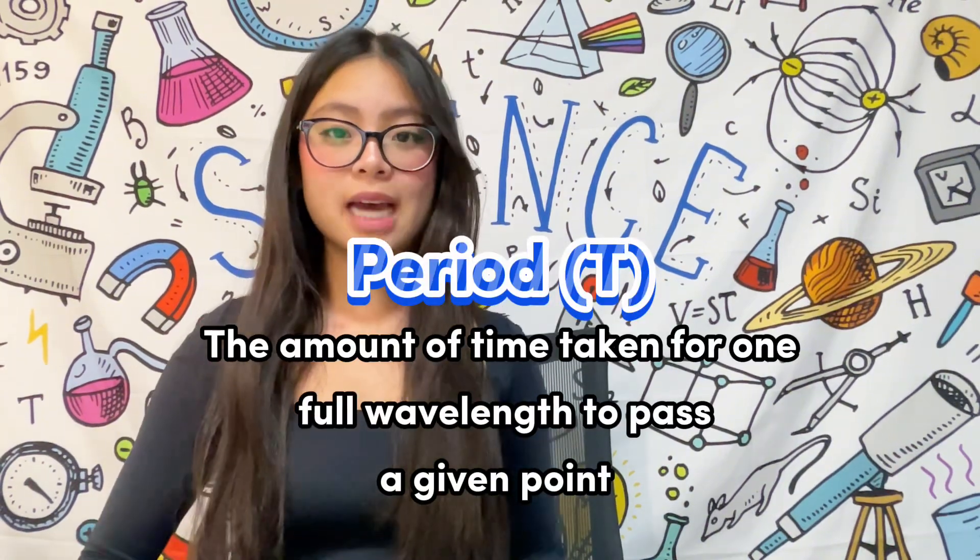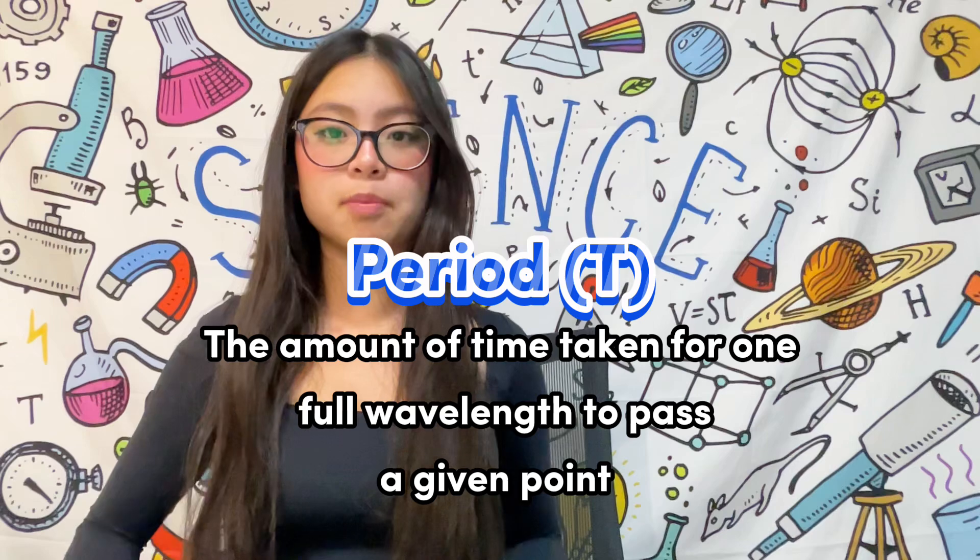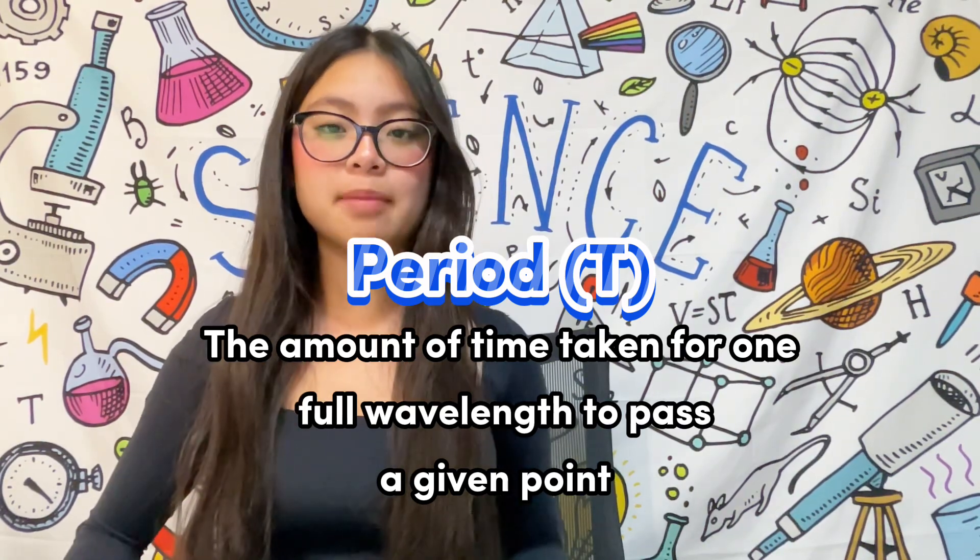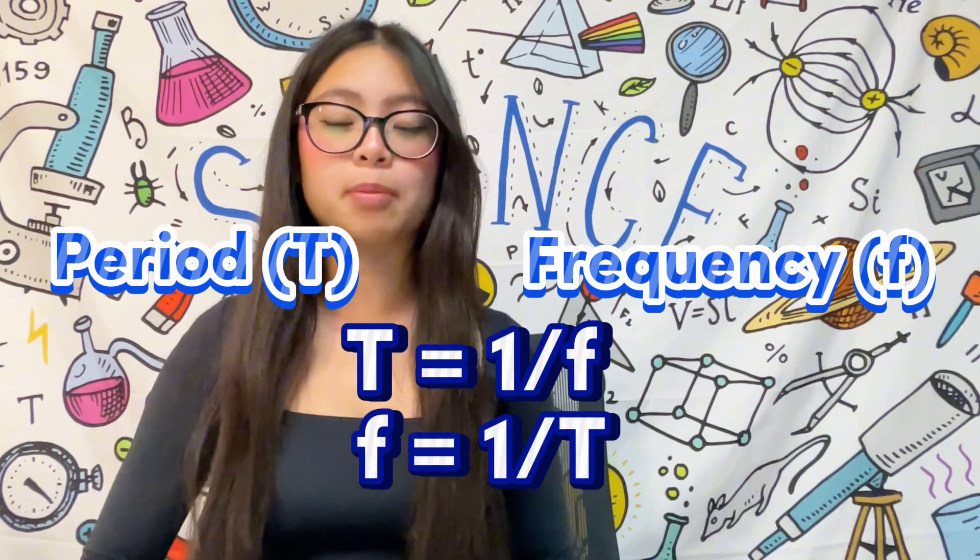Period is the amount of time it takes for one full wavelength or cycle to pass a given point. Or like I mentioned earlier, period is the amount of time taken for one full cycle to complete. Period can be represented by the letter T. And the relationship between period and frequency is that they are inversely proportionate to each other. And this makes sense.